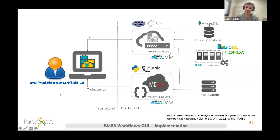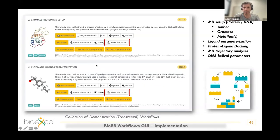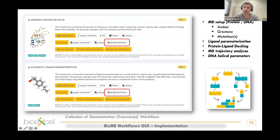The collection of transversal workflows from the BioExCEL building blocks can be launched using this website. Most of the demonstration workflows integrated include: setup of a protein, DNA, or protein-with-ligand using GROMACS; with the possibility to mutate a residue, parameterize a ligand, run a docking with a protein and ligand, analyze MD trajectories, and DNA-specific analysis including helical parameters. All of these workflows are integrated in the BioBB workflows website.